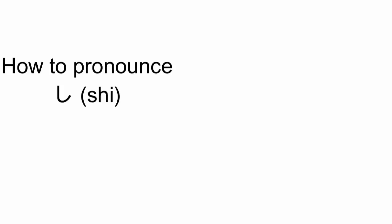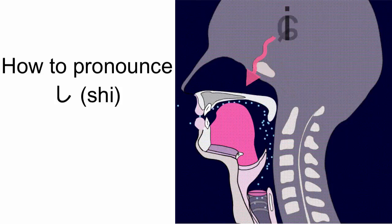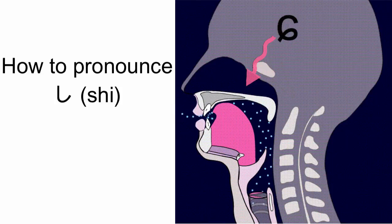To pronounce Japanese し, set your mouth for the pronunciation of the vowel い, then move your tongue upward to get it closer to the roof of your mouth.